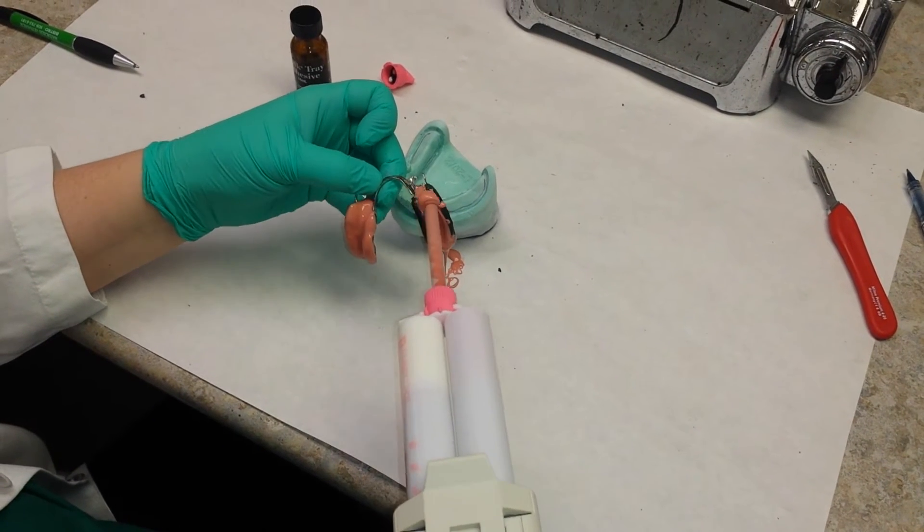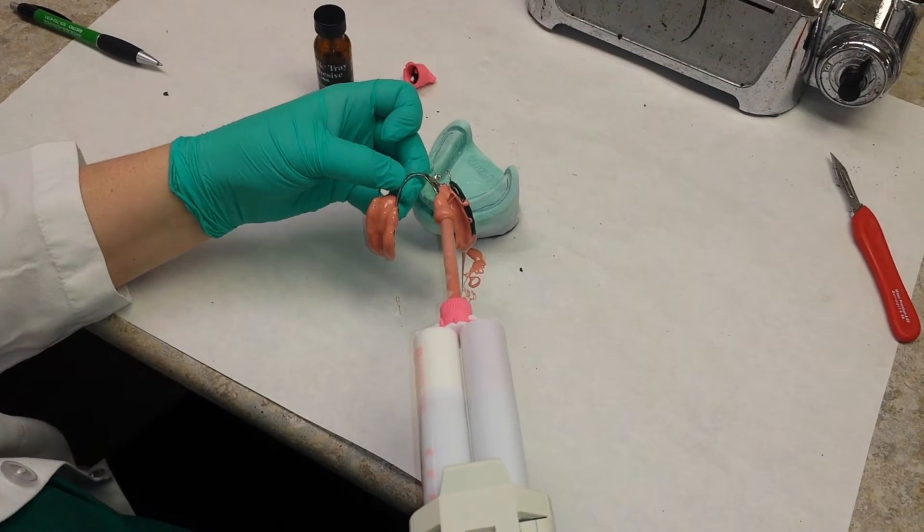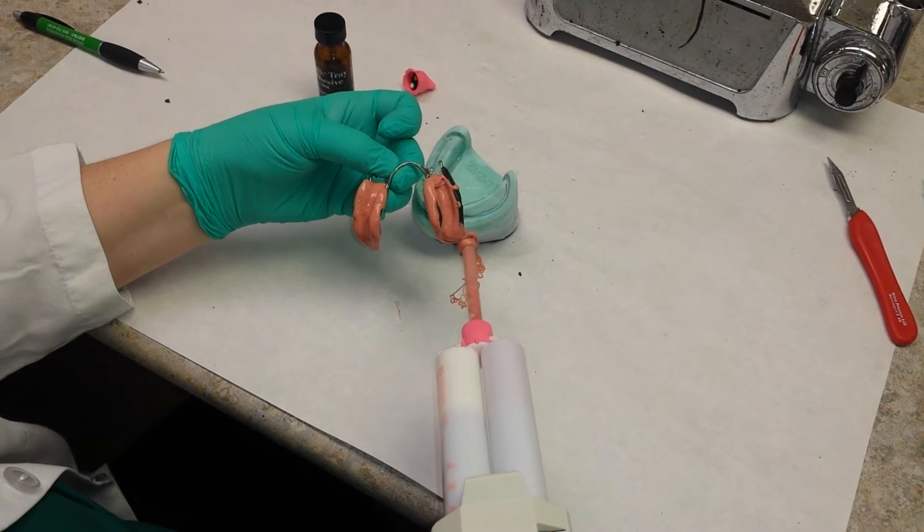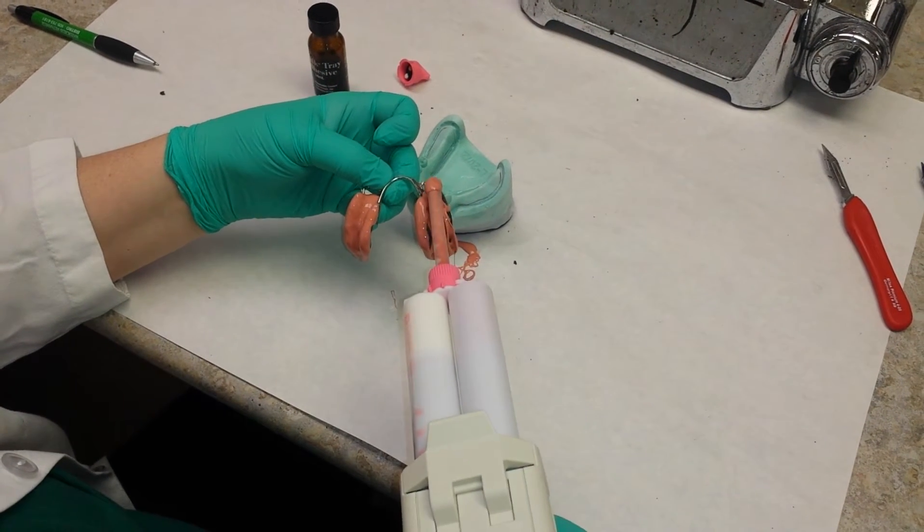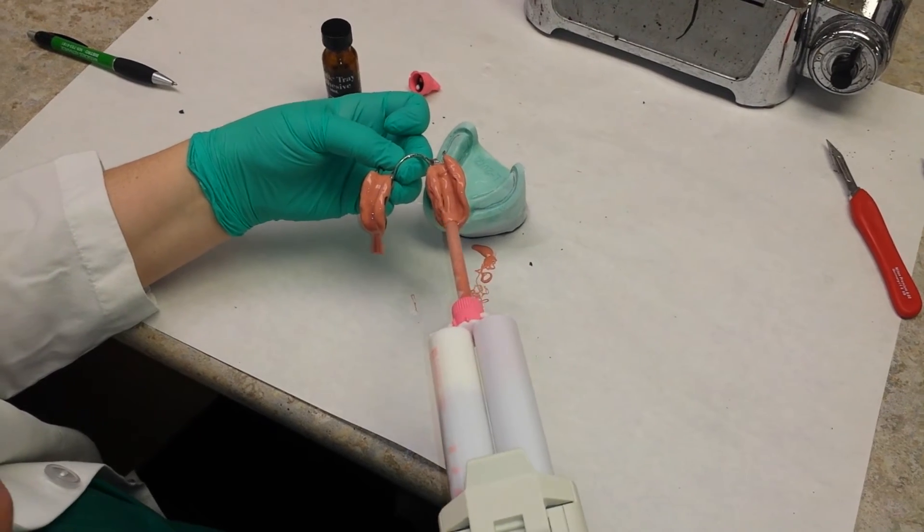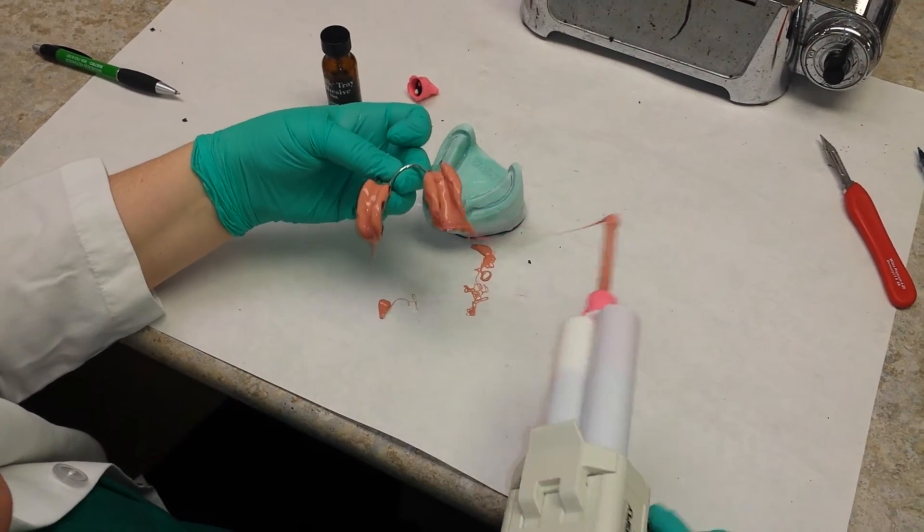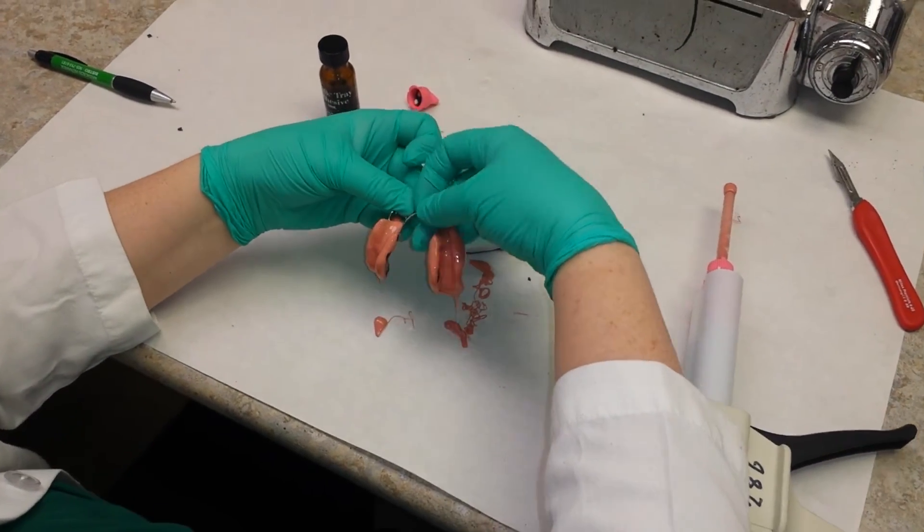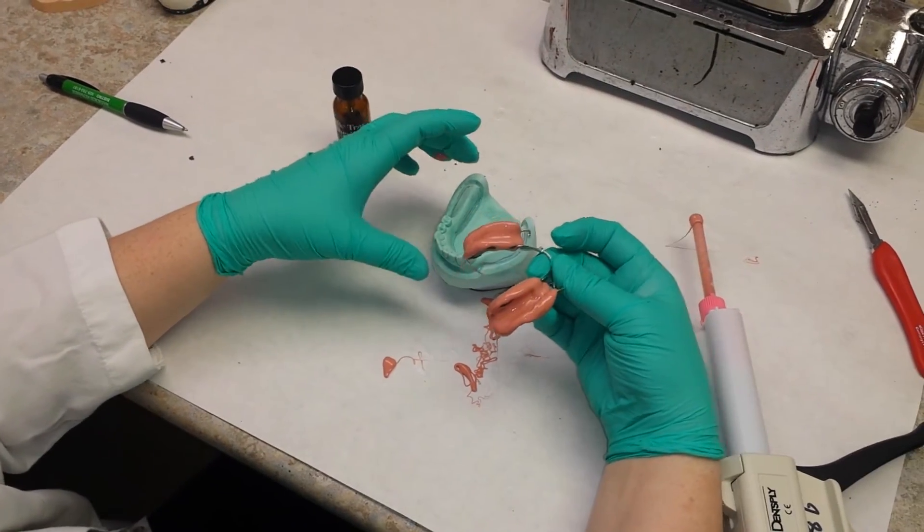I'm going to take some of the excess out of here. You want to have the same amount of material on the border as on the inside of the ridge because you're taking an impression of soft tissue. It's going to always be a little drippy with this light body material.